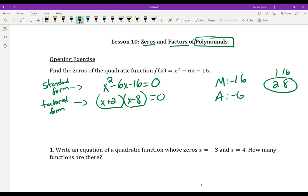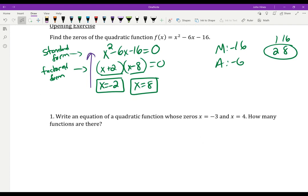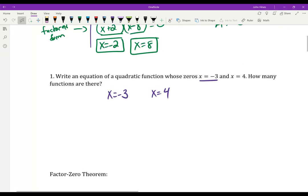So the factors give me the zeros of negative 2 and positive 8. And you know that we could have checked those by going to our calculator and seeing where it hits the x-axis. But today is all about, if I know my zeros, how do I work backwards? So write an equation of a quadratic function whose zeros are x equals negative 3 and x equals 4. So those are my zeros. I want to work backwards now and get my factors.